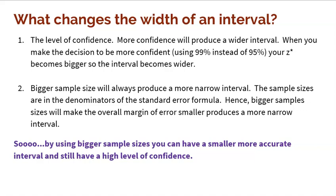Another number that affects your margin of error and interval width is the sample size. Bigger samples will always produce a more narrow interval. The sample sizes are in the denominator of the standard error formula, so bigger samples will make the overall margin of error smaller, which produces a more narrow interval. Bigger samples are flat out more accurate. So if you want to maintain a high level of confidence — 95%, 98%, 99% — but still produce a very narrow interval that is accurate to what the truth is, a bigger sample size will do it.